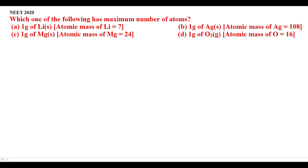Hello students, this question appeared in NEET 2020 — it's a very easy question. Which one of the following has the maximum number of atoms? The four options are: one gram of lithium, one gram of silver, one gram of magnesium, and one gram of oxygen.